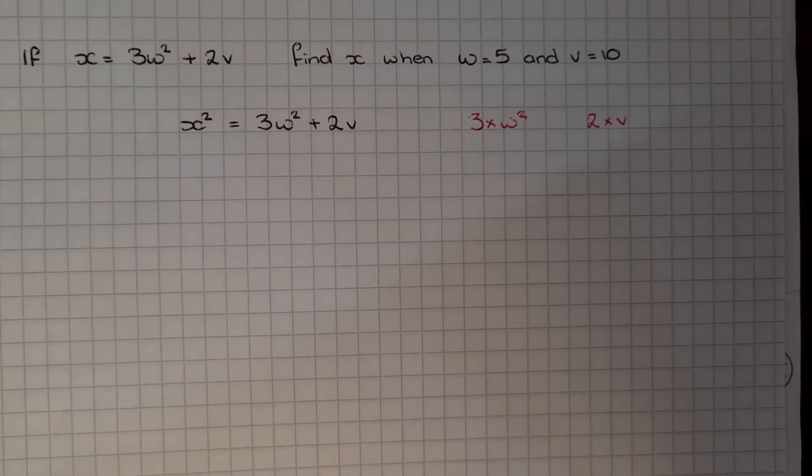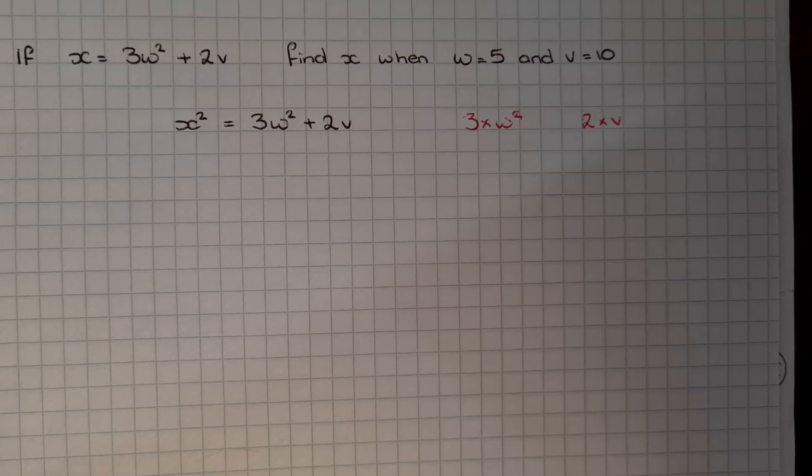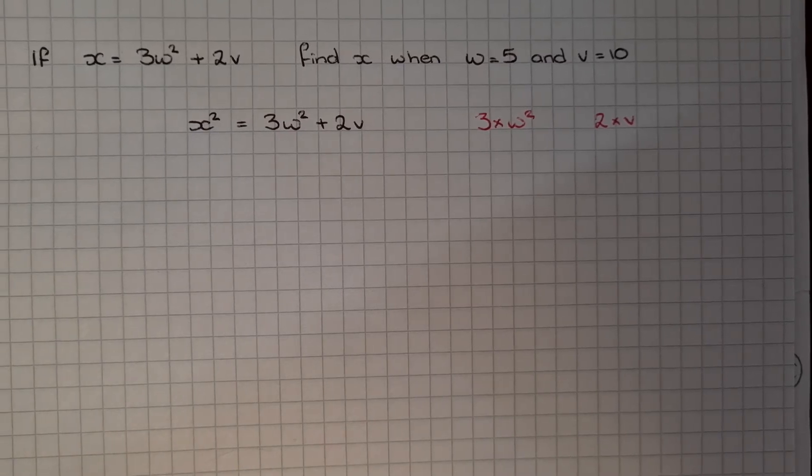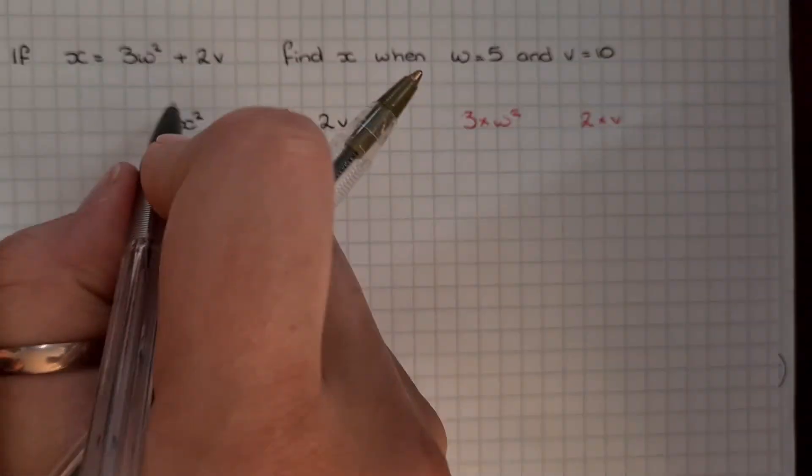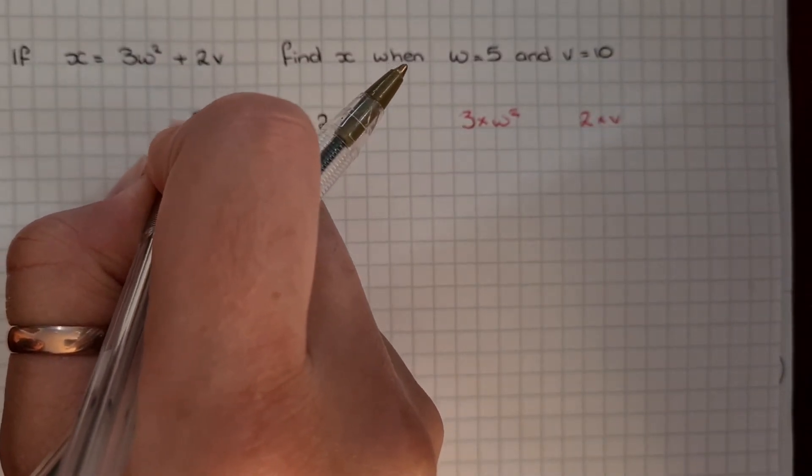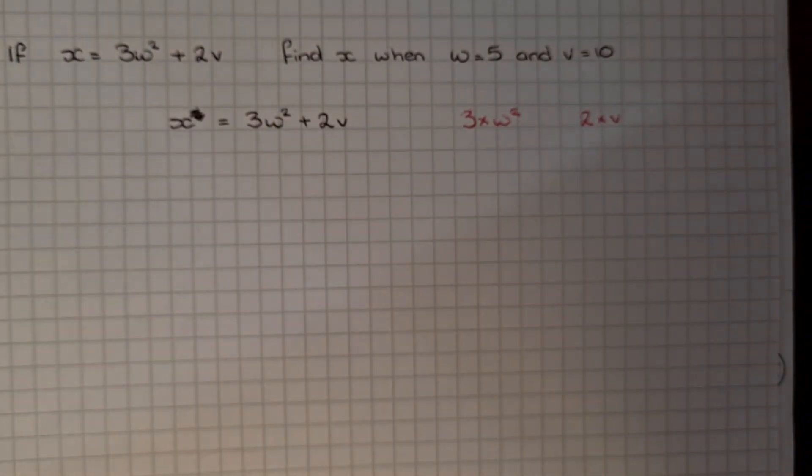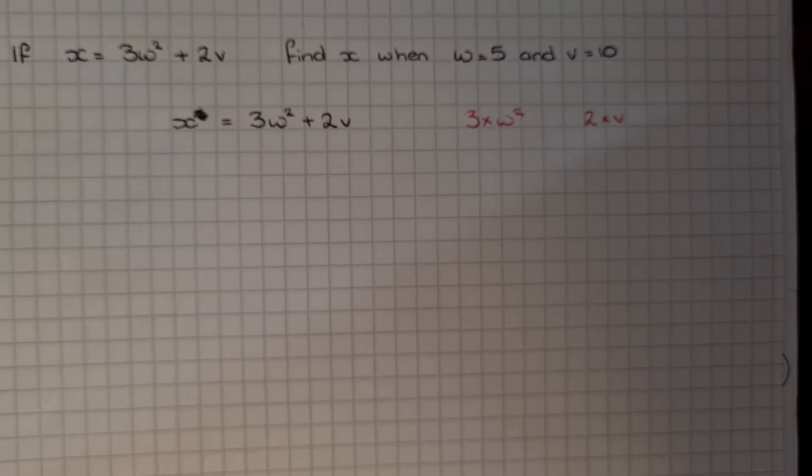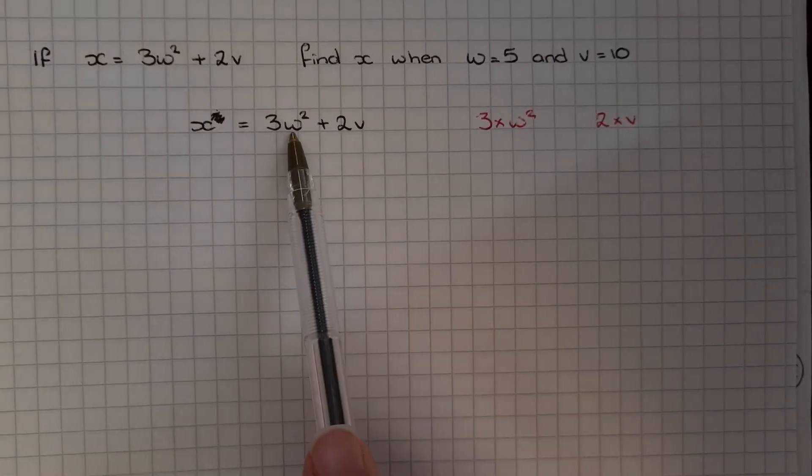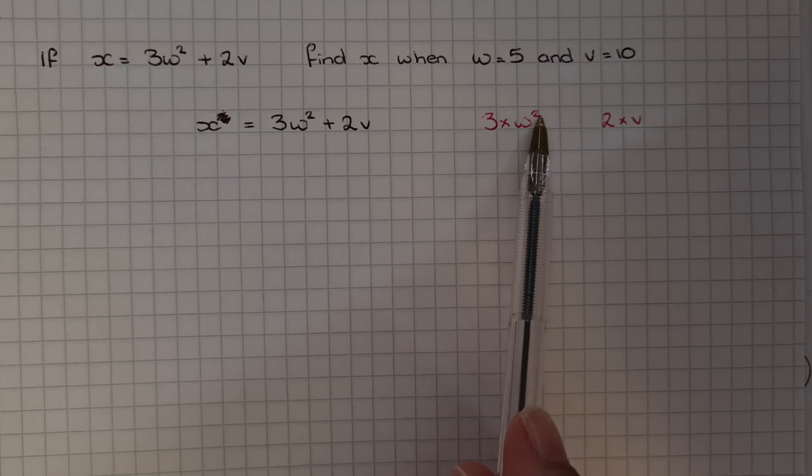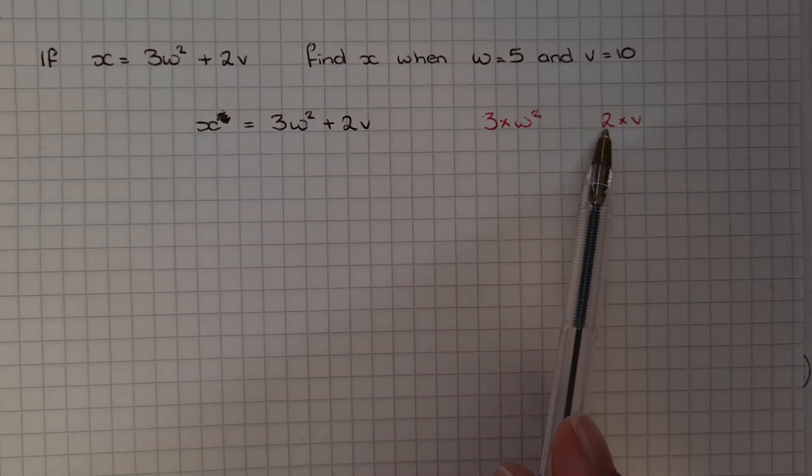Then we're going to replace the letters with numbers. I've just realized that's not supposed to have a 2 on it, it's just supposed to be X. Then we're going to replace the letters with numbers. We know that 3W squared means 3 times W squared, and 2V means 2 times V.